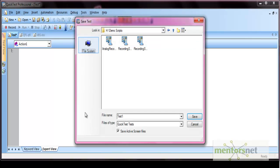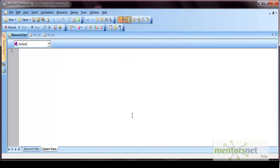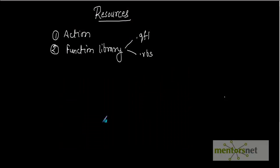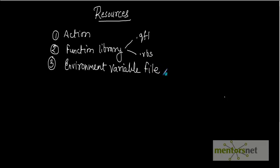Save this test as 'Resources Test.' The next resource is the Environment Variable file. This is another resource, and this file is stored in .XML format. Environment variables are used to fetch data from either the built-in variables or the user-defined variables.